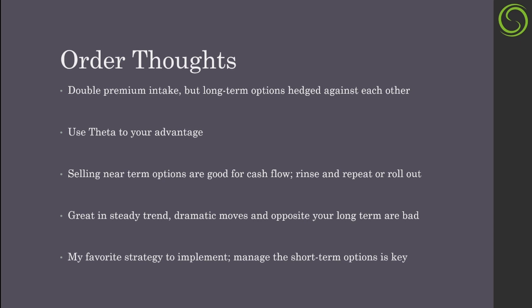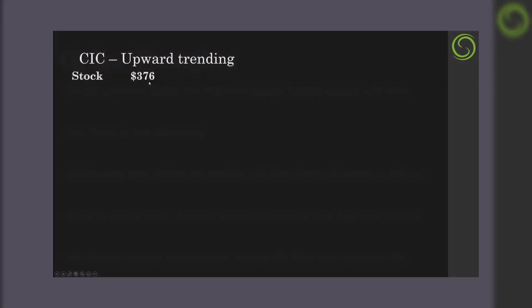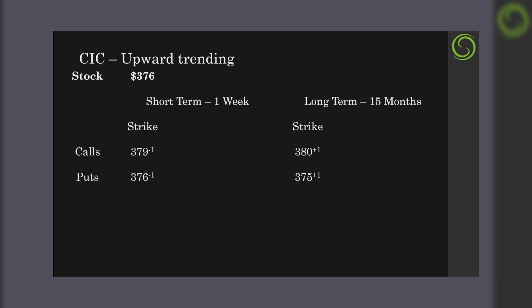It took me a while to really understand all the moving parts, but managing the short-term options is the key with this strategy. I'll be showing off a whole separate video series just on this strategy. For this example, we'll use the KEC strategy with a slightly upward-trending stock currently around $376, selling short-term options about a week out and buying longer-term options about 15 months out.